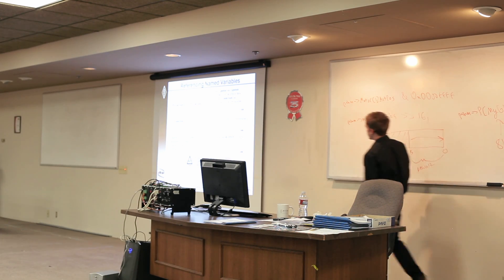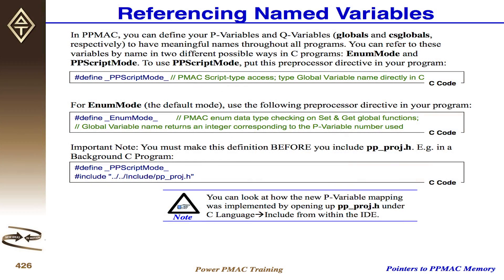To pick which mode to use, right before ppproj gets defined, you do a #define of either _ppscriptmode_ or _enummode_. My recommendation is to use enum mode, because it forces you to be aware of which variables you've defined in script and which you've defined in C. That's helpful because many variables defined in C will be local and you want them to go away — this helps you remember which is which. But it's customer preference.